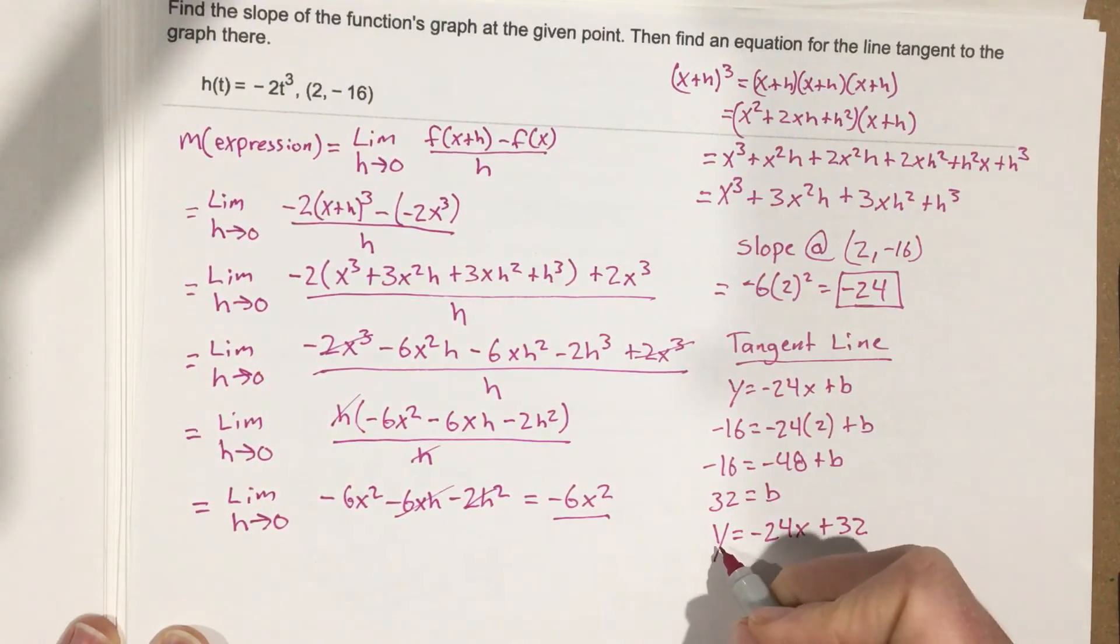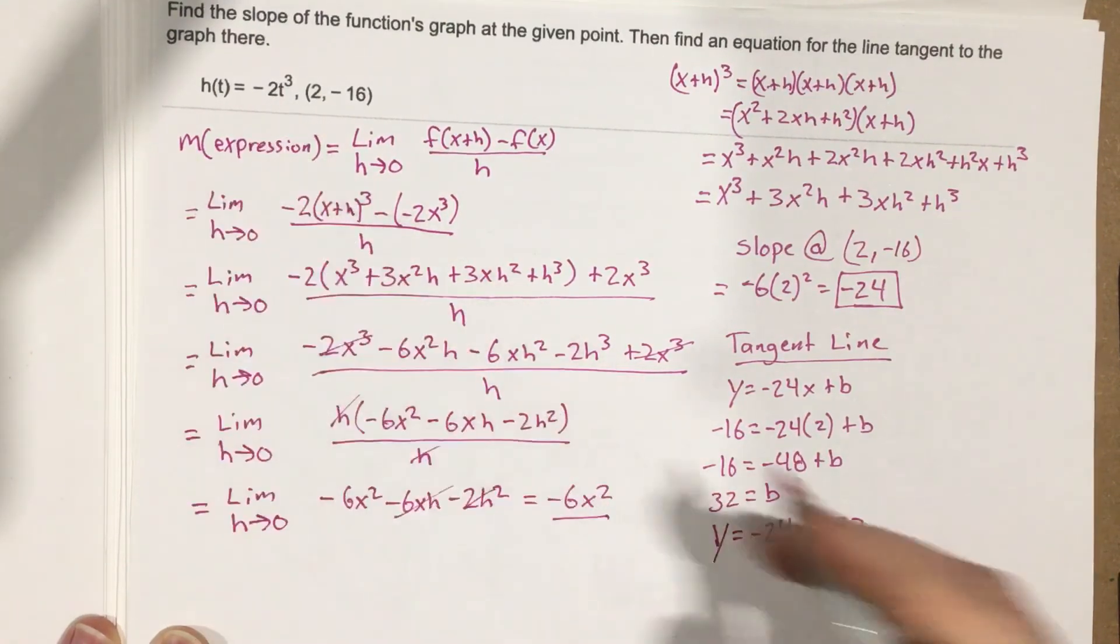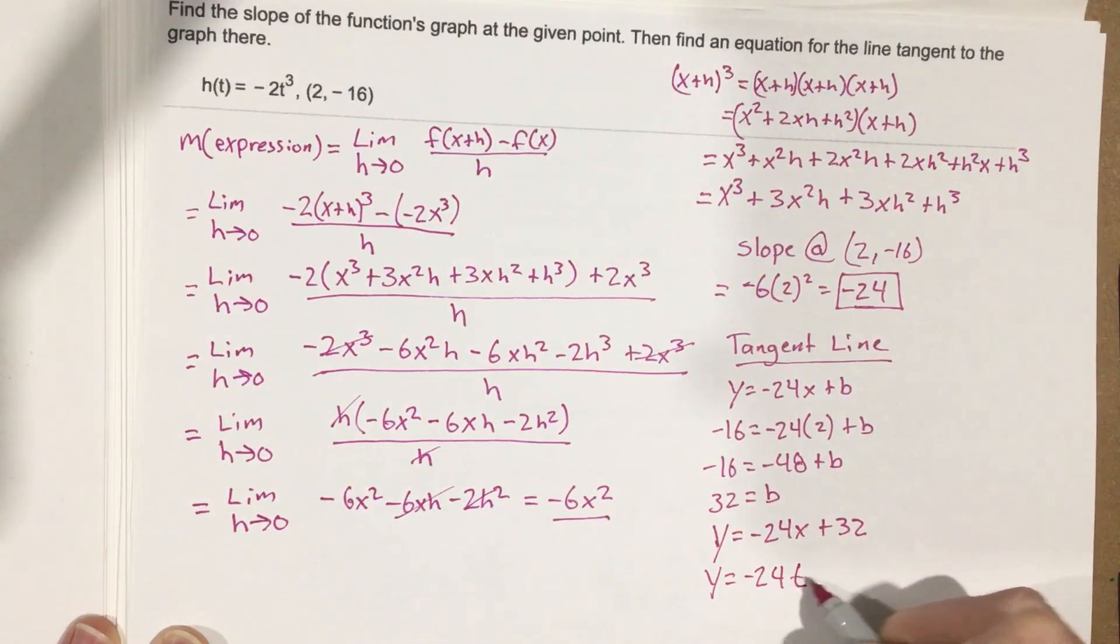Now I do want to point out that I should probably be using a t here instead of an x. We kind of went through and we were using x's this whole time. I should rewrite this with the t because the original function has t, so we should say that that's y equals negative 24t plus 32.